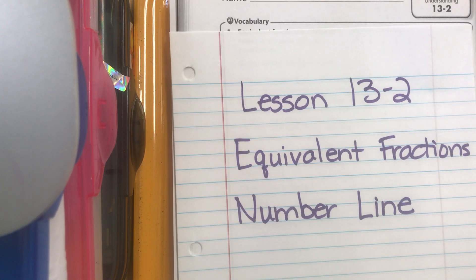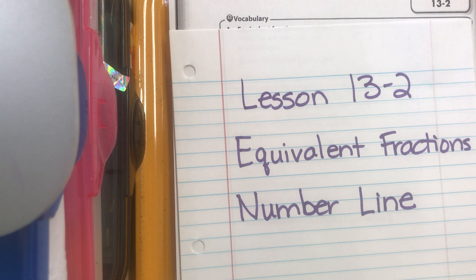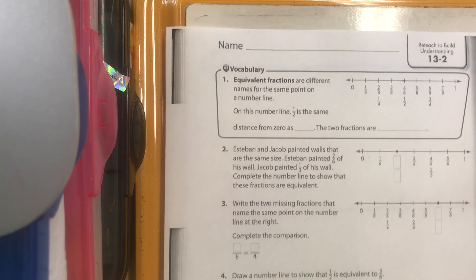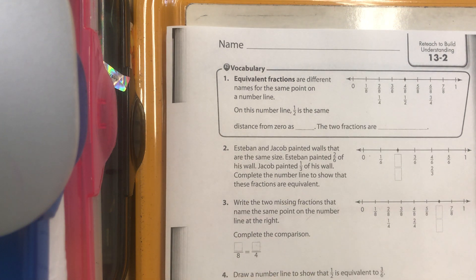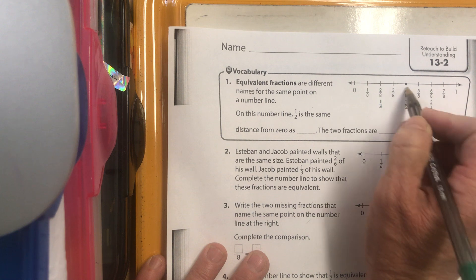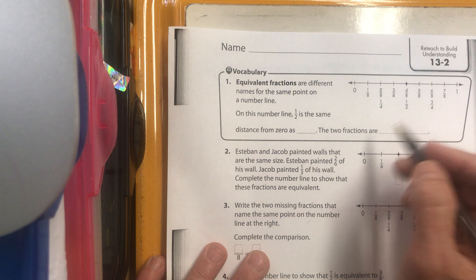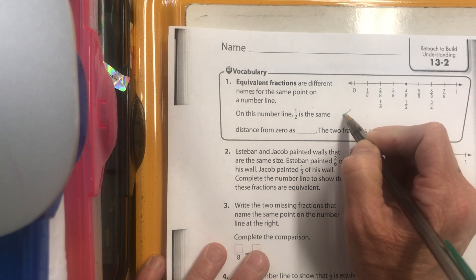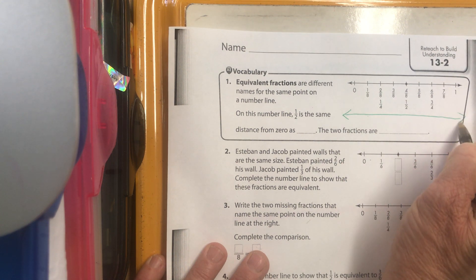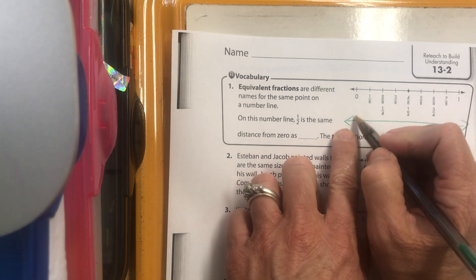We're going to do lesson 13-2, equivalent fractions on a number line. We have already done equivalent fractions using our fraction flip book and drawing pictures, and now we're going to do the same exact thing — find fractions that are the same — but using a number line. The most important thing is that you always draw a second number line. Do not try to write a second set of fractions with a totally different denominator below this one, so draw a totally separate number line.